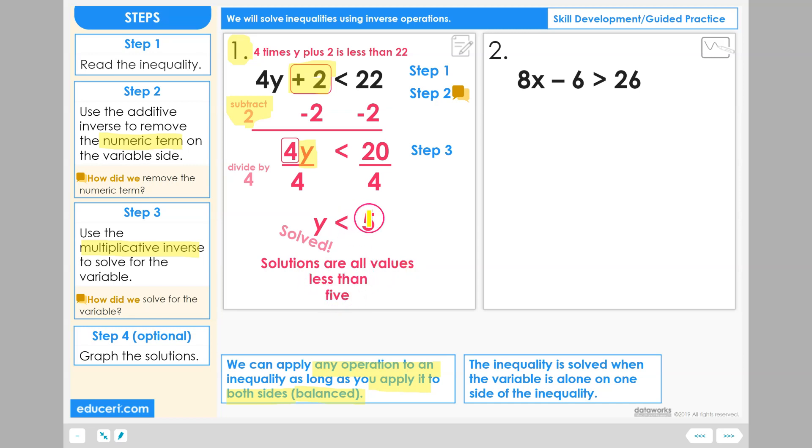So 5 is not included, but 4, 3, 2, and anything lower is all included because these are all values as long as they are less than 5.